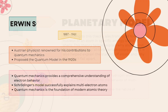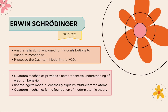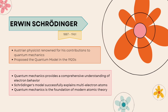Now we will learn about the contributions of Erwin Schrödinger, an Austrian physicist renowned for his work in quantum mechanics, who proposed the quantum model in the 1920s. Quantum mechanics provides a comprehensive understanding of electron behavior, Schrödinger's model successfully explained multi-electron atoms, and quantum mechanics is the foundation of modern atomic theory.